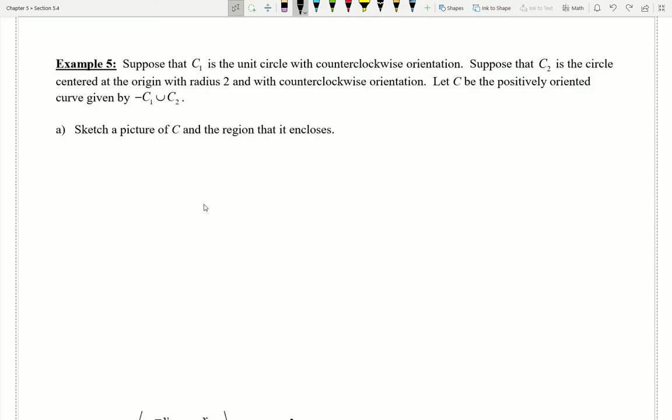Suppose that C1 is the unit circle with a counterclockwise orientation. Suppose that C2 is a circle centered at the origin with radius 2 and also has a counterclockwise orientation. And let C be the positively oriented curve that's given by the union of these two curves, specifically C2 unioned with negative C1.